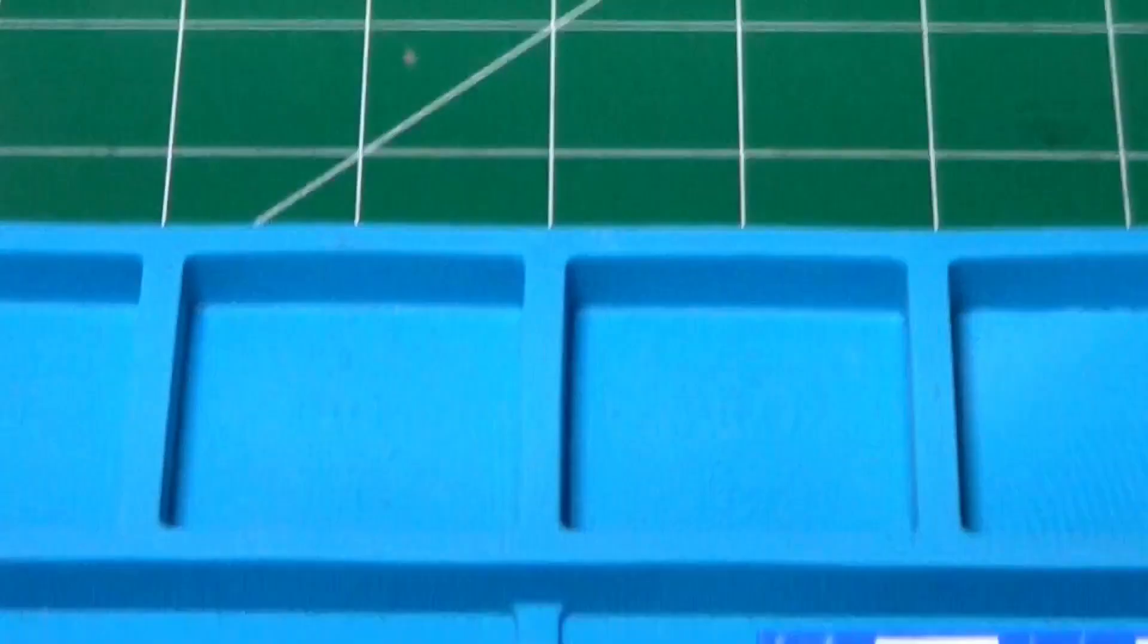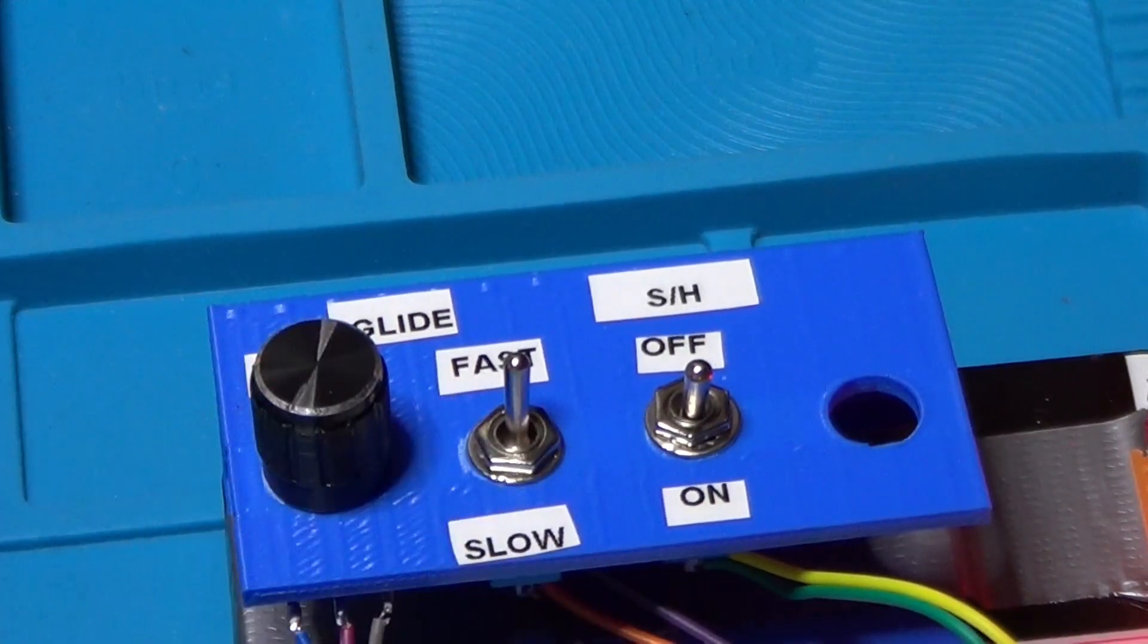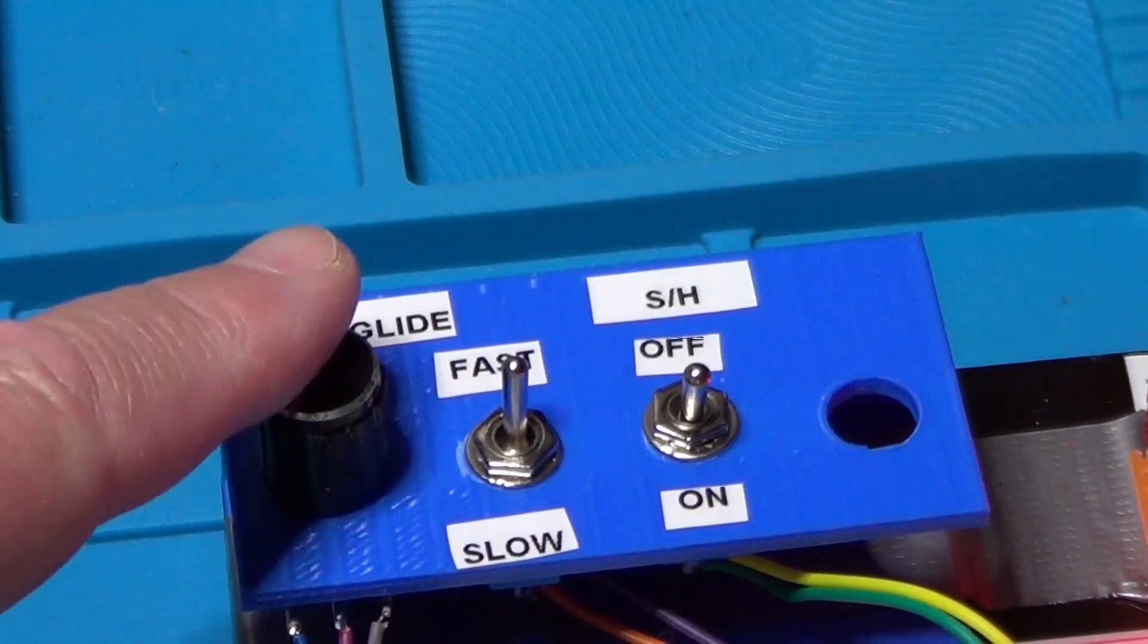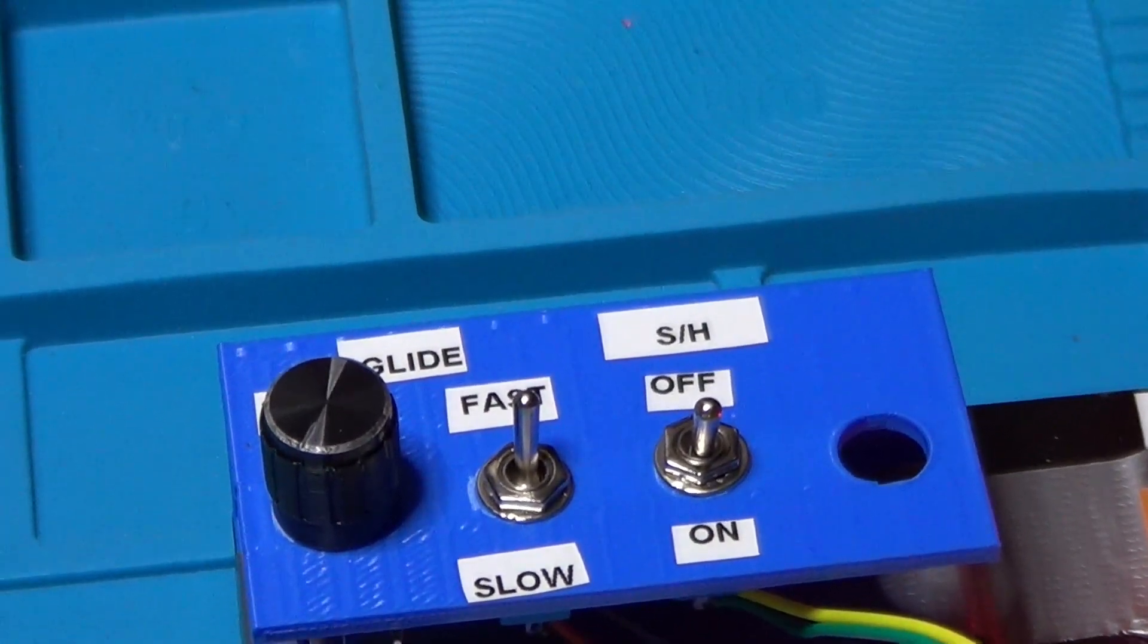Once again, the controls of the glide are currently set to the fast rate, and the potentiometer is all the way to the left, which means the shortest time or fastest speed. Let's now look at the oscilloscope while I increase the time through the potentiometer.